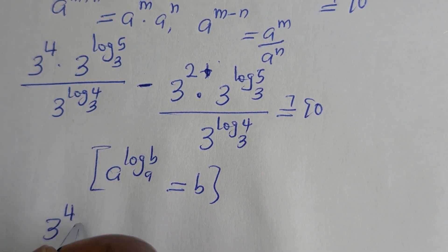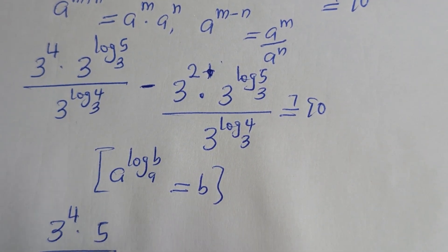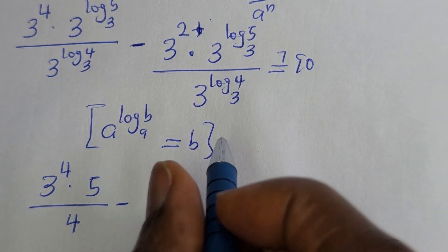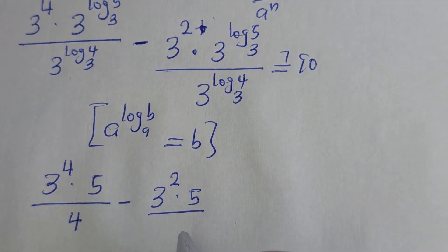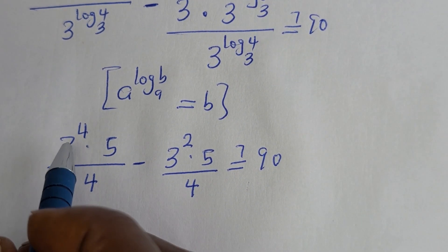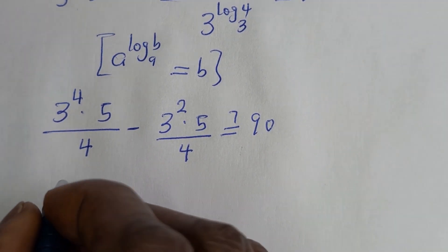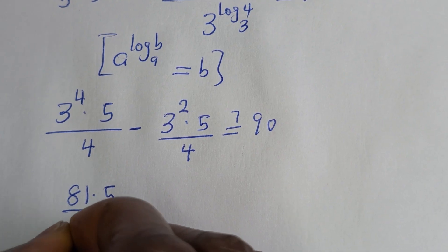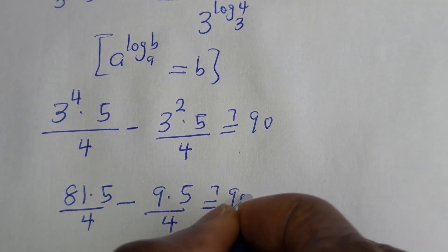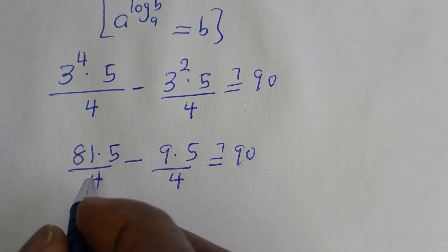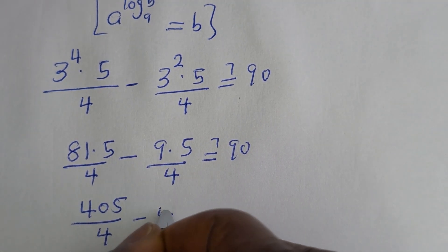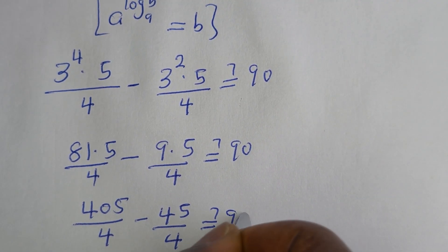This gives 3 raised to power 4, multiplied by 5 over 4, minus 3 squared multiplied by 5 over 4, must equal 90. So we have 81 multiplied by 5 over 4, minus 9 multiplied by 5 over 4, which is 405 over 4 minus 45 over 4, must equal 90.